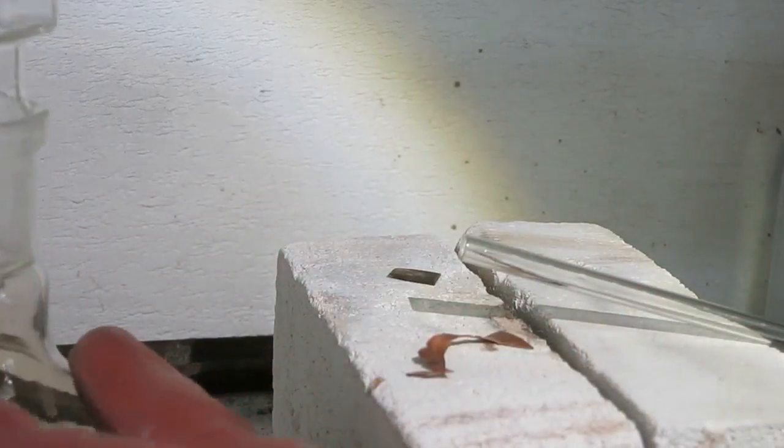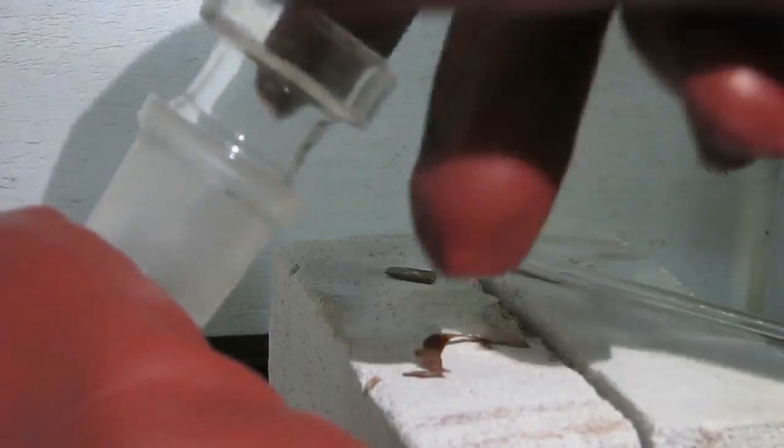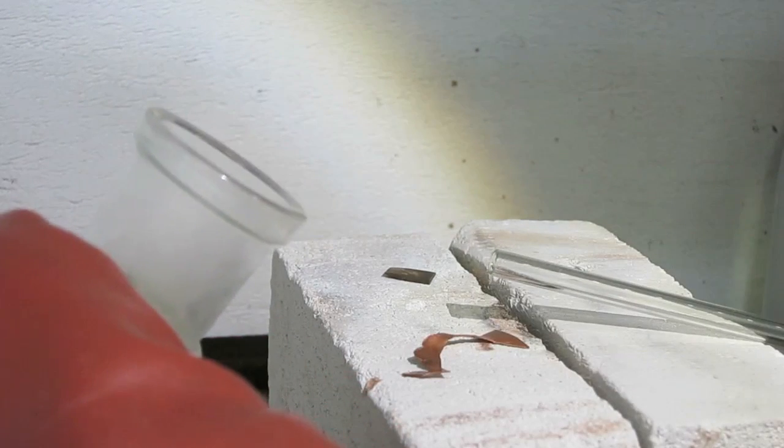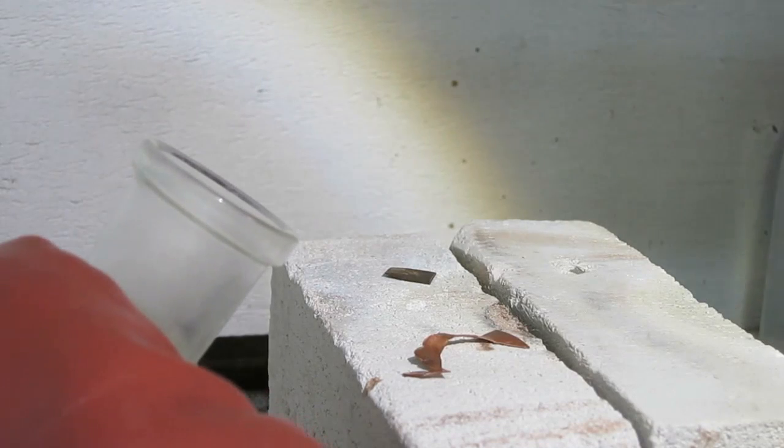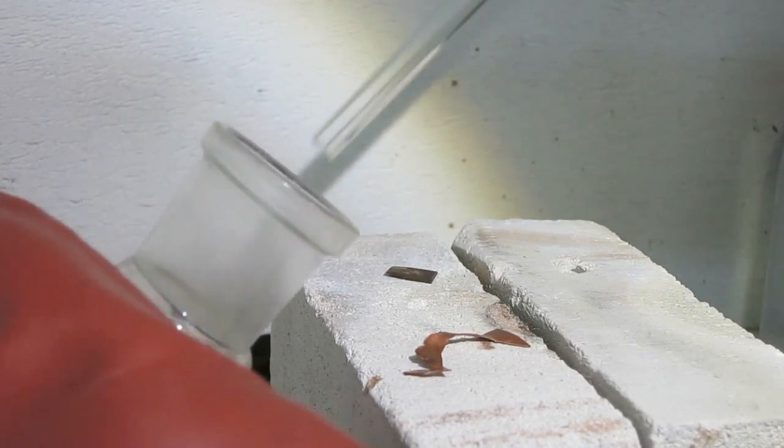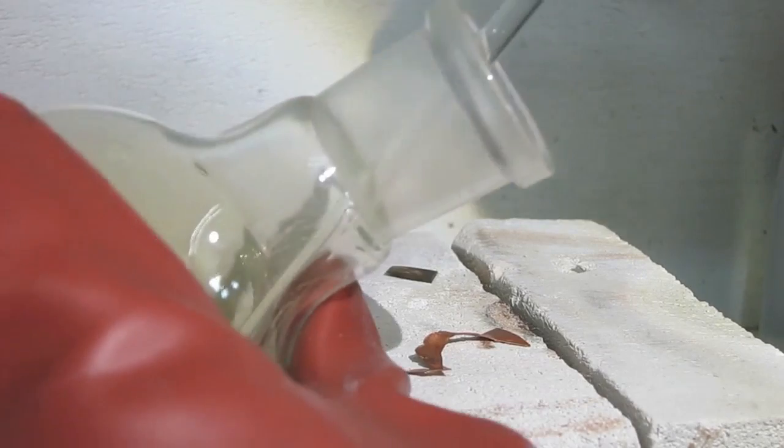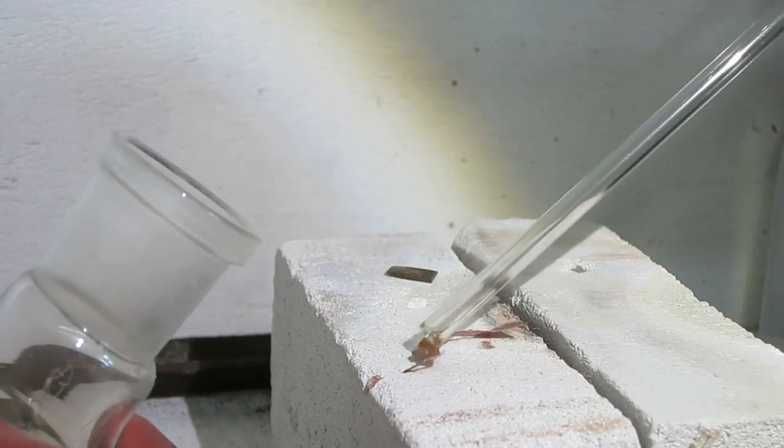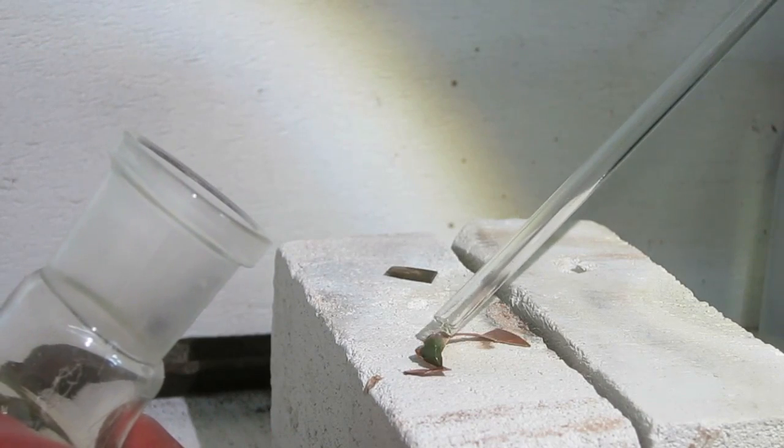Now I'm going to check whether this is really nitric acid. I put a small drop. You see it already. The brownish fumes that's indeed NO2. I put a glass tube into the acid and put a little drop on a piece of copper. You see what happens.